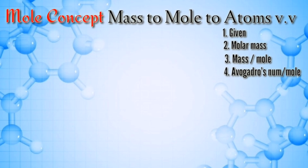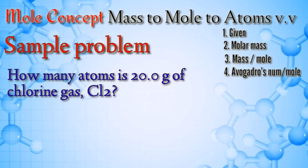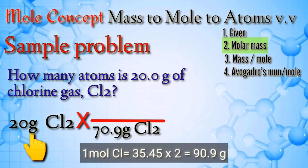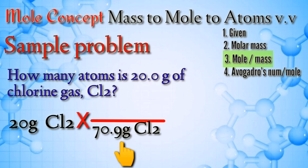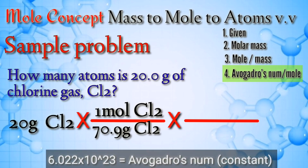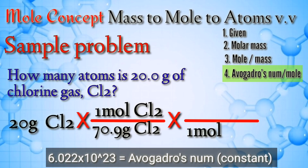Let's have a sample problem. How many atoms are in 20 grams of chlorine gas? Our given is 20 grams of chlorine gas. Next, we get the molar mass — the molar mass of chlorine gas is 70.9 grams per mole. Since our given is in grams, the molar mass should be written as the denominator. Our mole-to-mass ratio is: one mole of chlorine gas is to 70.9 grams of chlorine gas.